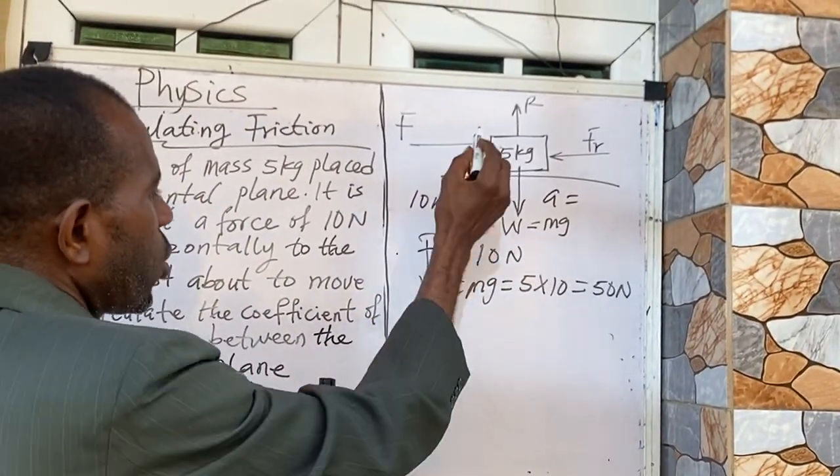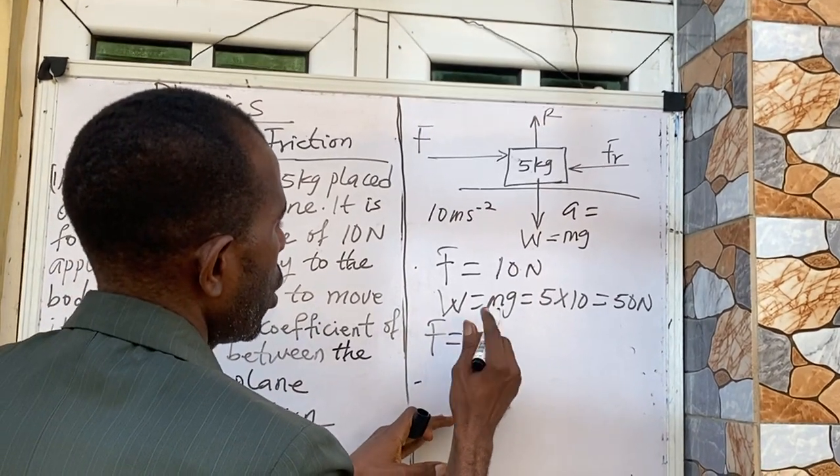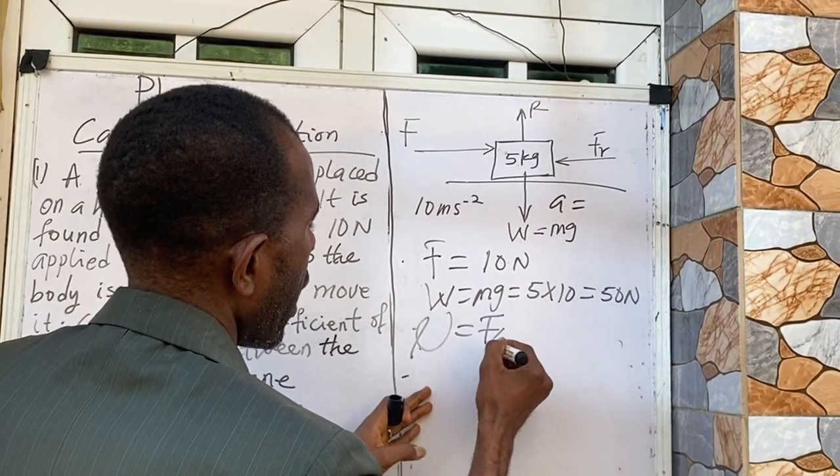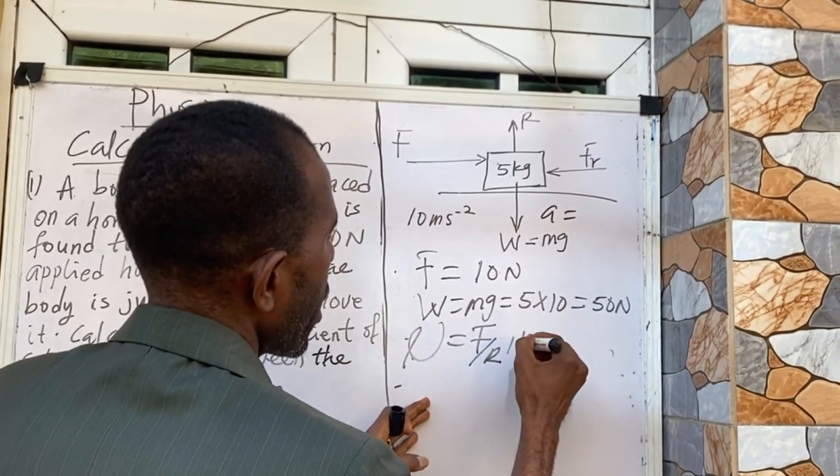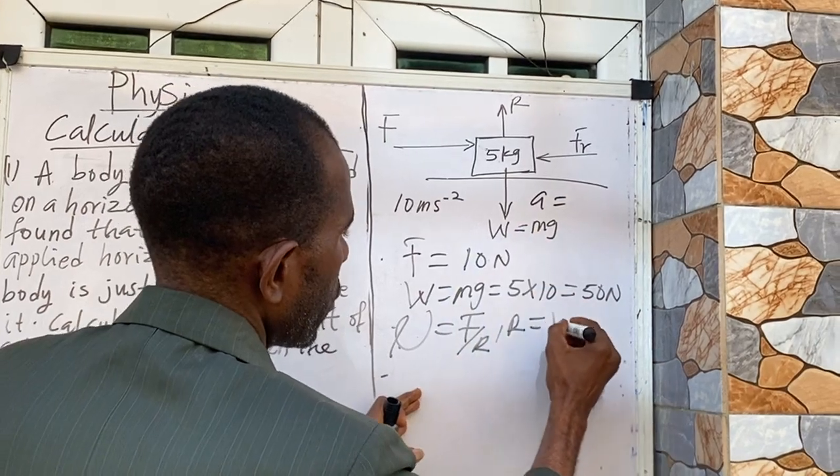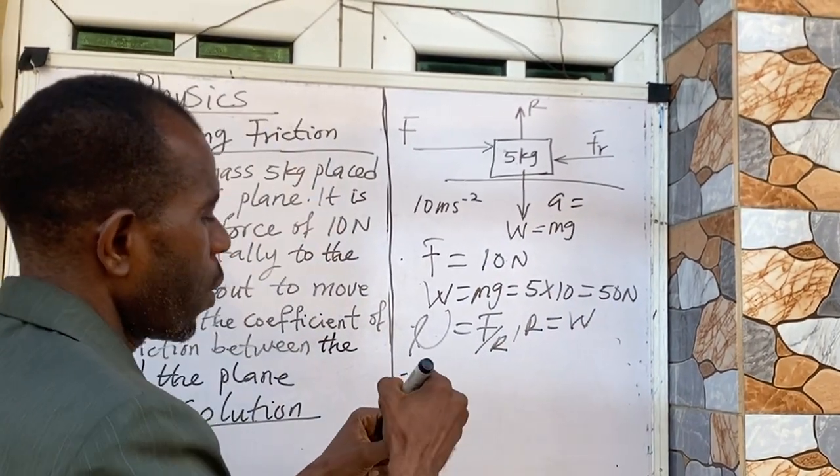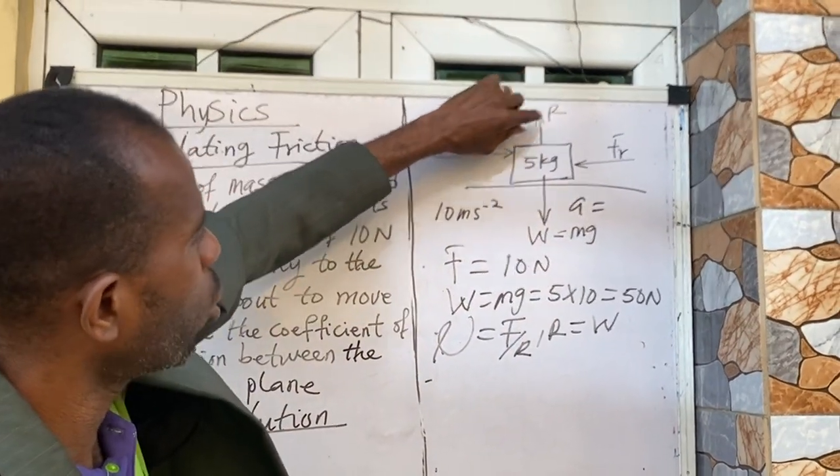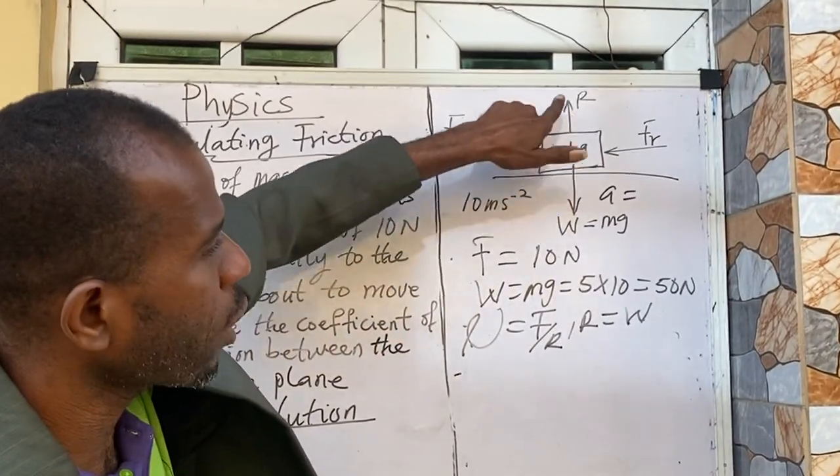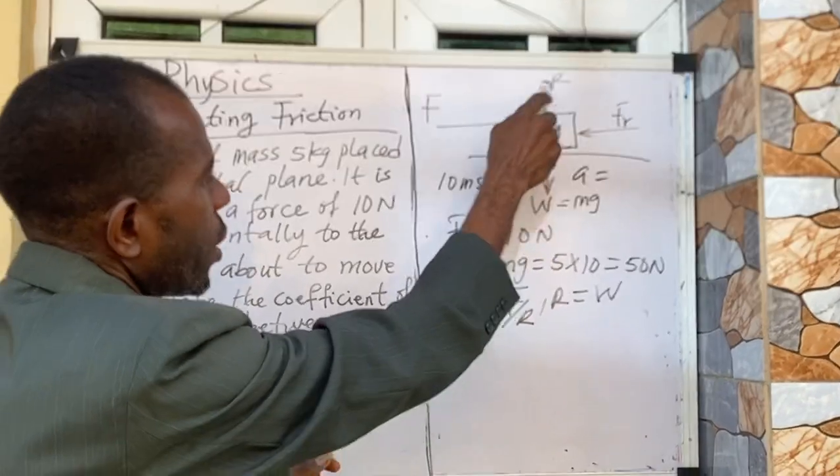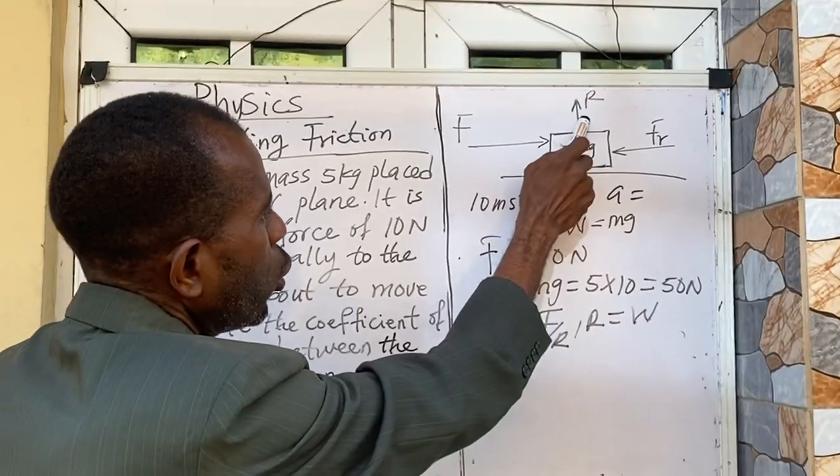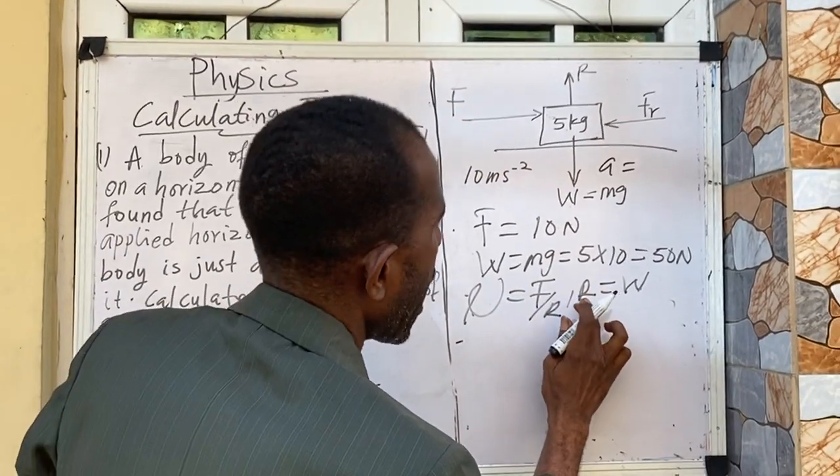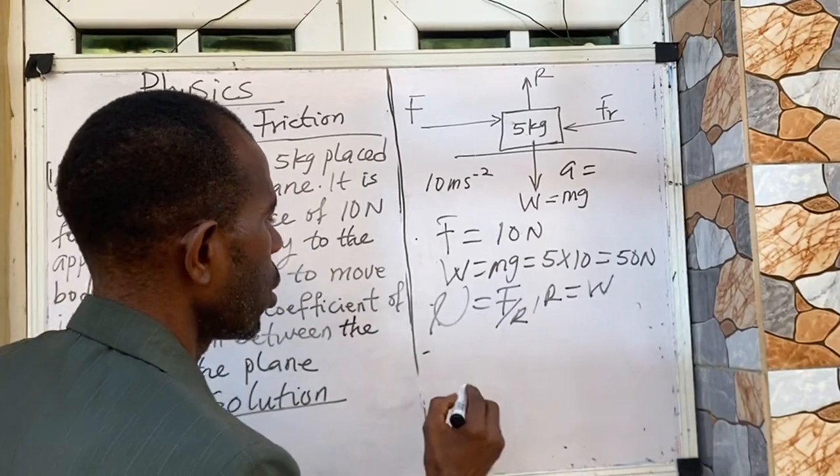But remember this R here that we are interested in - which is μ equal to F over R - this R here is equal to this W. Because according to Newton's third law of motion, it says that to every action there is equal and opposite reaction. Which means this weight here is acting downward and this reaction force is acting upward. So they are equal.